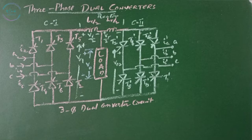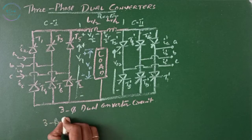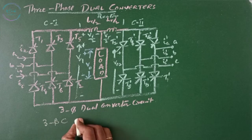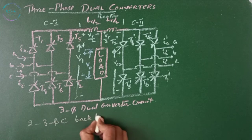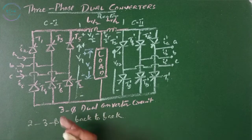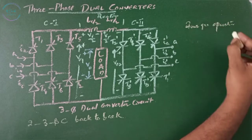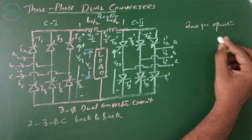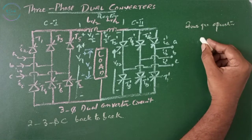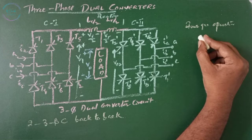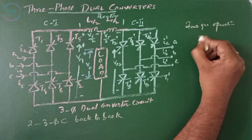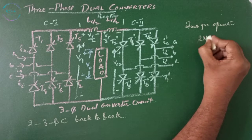A three-phase dual converter consists of two three-phase converters connected back-to-back. When we require four-quadrant operation for variable speed drives, we choose a dual converter. It is used in applications up to two megawatts.